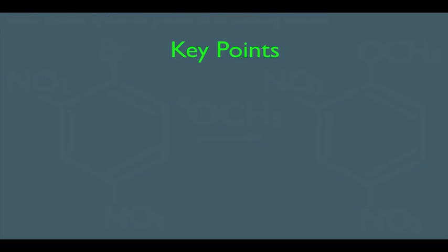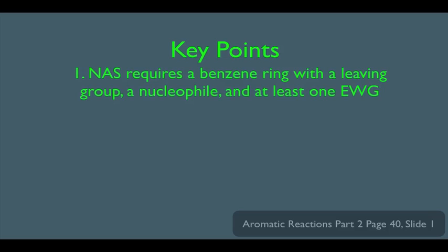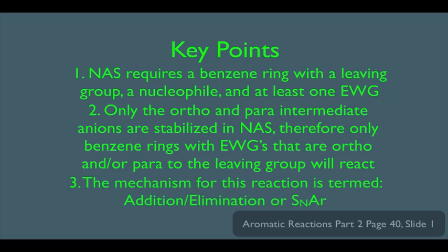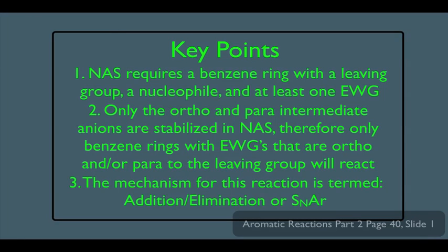To summarize our key points: number one, nucleophilic aromatic substitution requires a benzene ring with a leaving group, a nucleophile, and at least one electron withdrawing group. Number two, only the ortho and para intermediate anions are stabilized, so only benzene rings with electron withdrawing groups ortho and/or para to the leaving group will react. Number three, the mechanism is called addition-elimination or SNAr, which is short for SN aromatic.